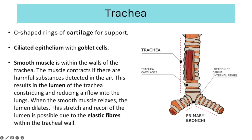The trachea is also lined by epithelial cells which are ciliated and contain goblet cells. Ciliated cells have hair-like structures that sweep away mucus in the trachea, and goblet cells produce that mucus. The mucus is thick and sticky so any pathogens or dust particles stick to it, and then the cilia sweep that mucus up the trachea so it can be coughed out and doesn't reach the lungs to cause infections.